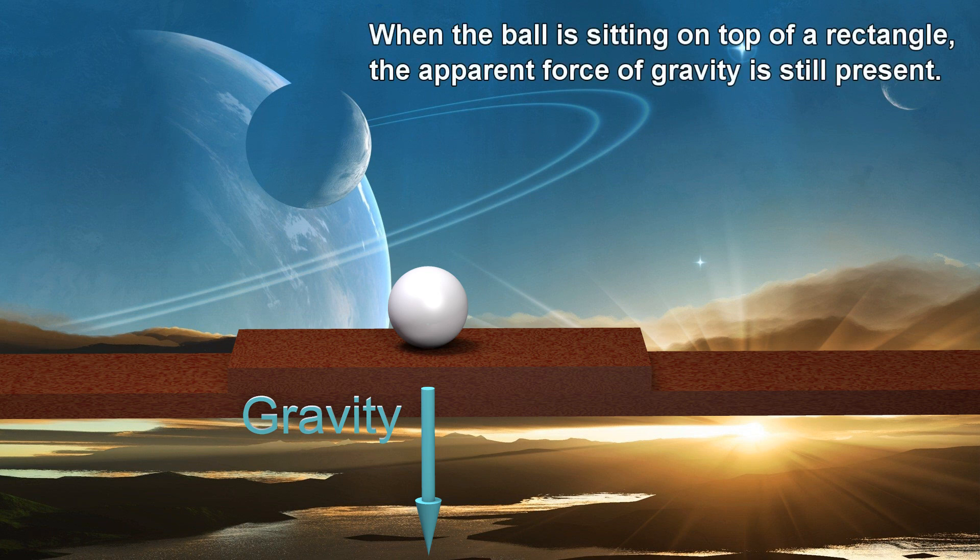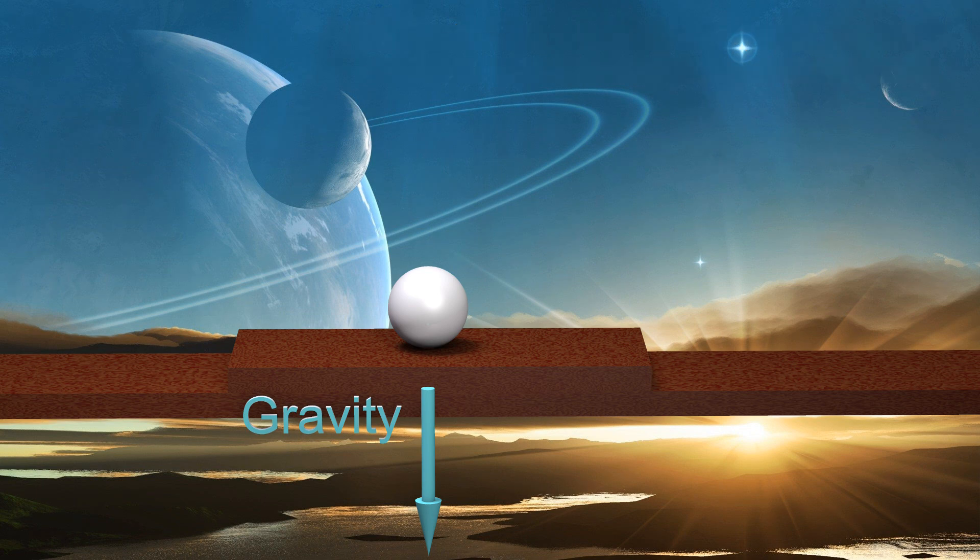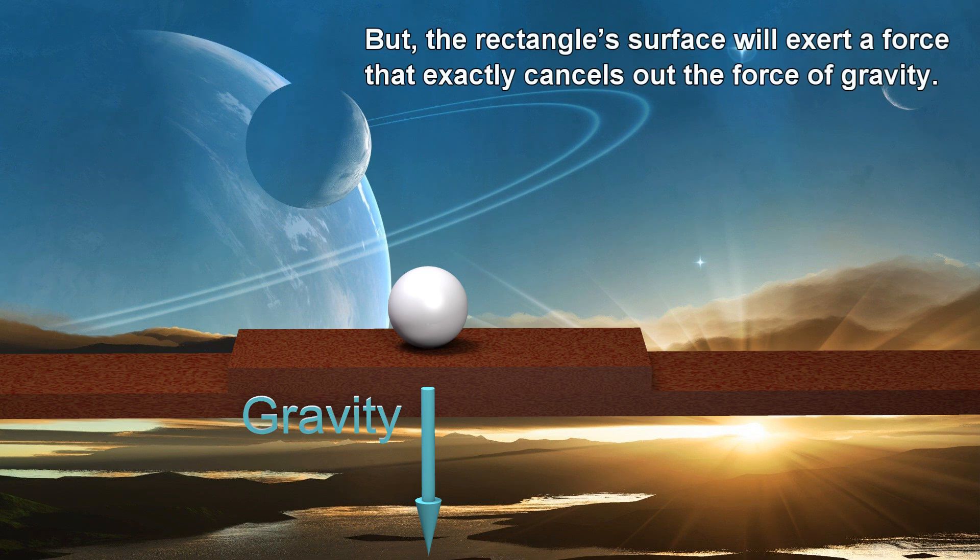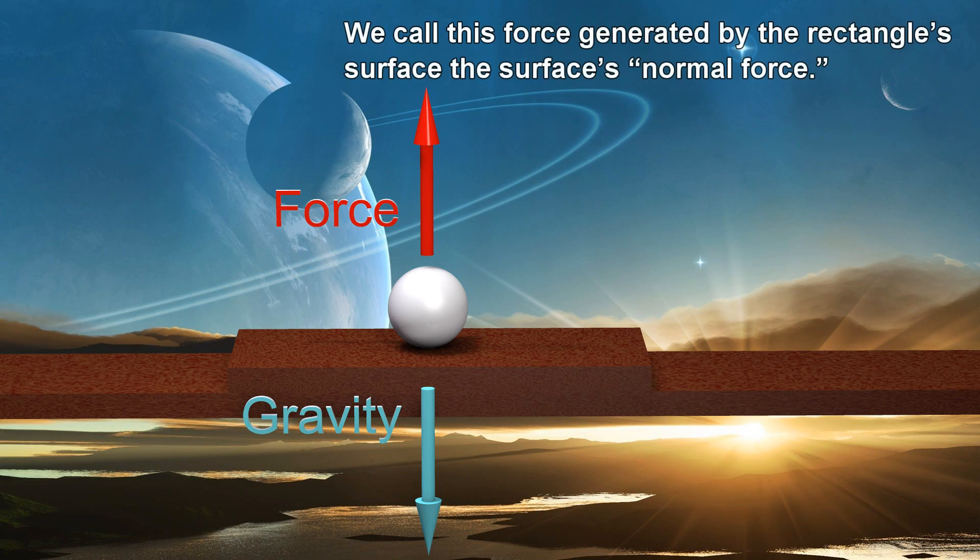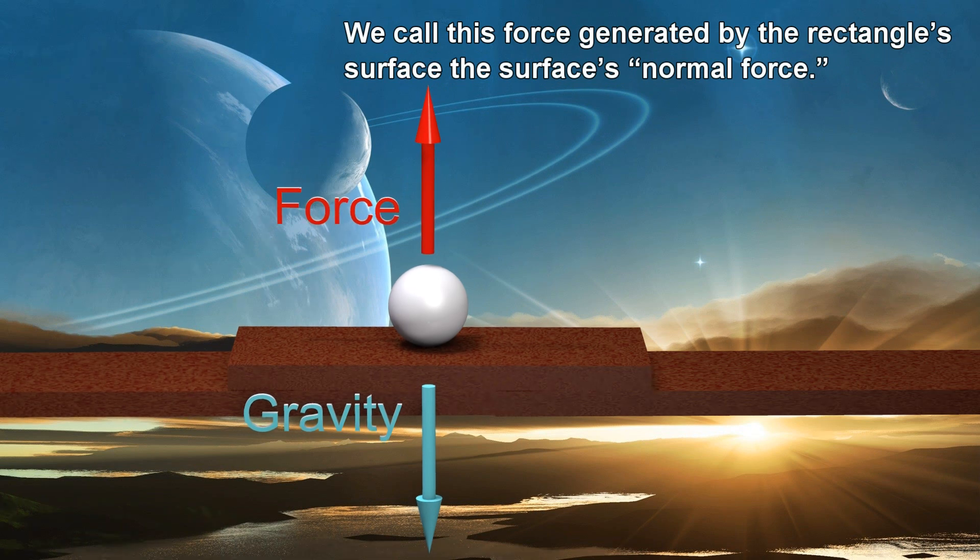When the ball is sitting on top of a rectangle, the apparent force of gravity is still present. But the rectangle's surface will exert a force that exactly cancels out the force of gravity. We call this force generated by the rectangle's surface the surface's normal force.